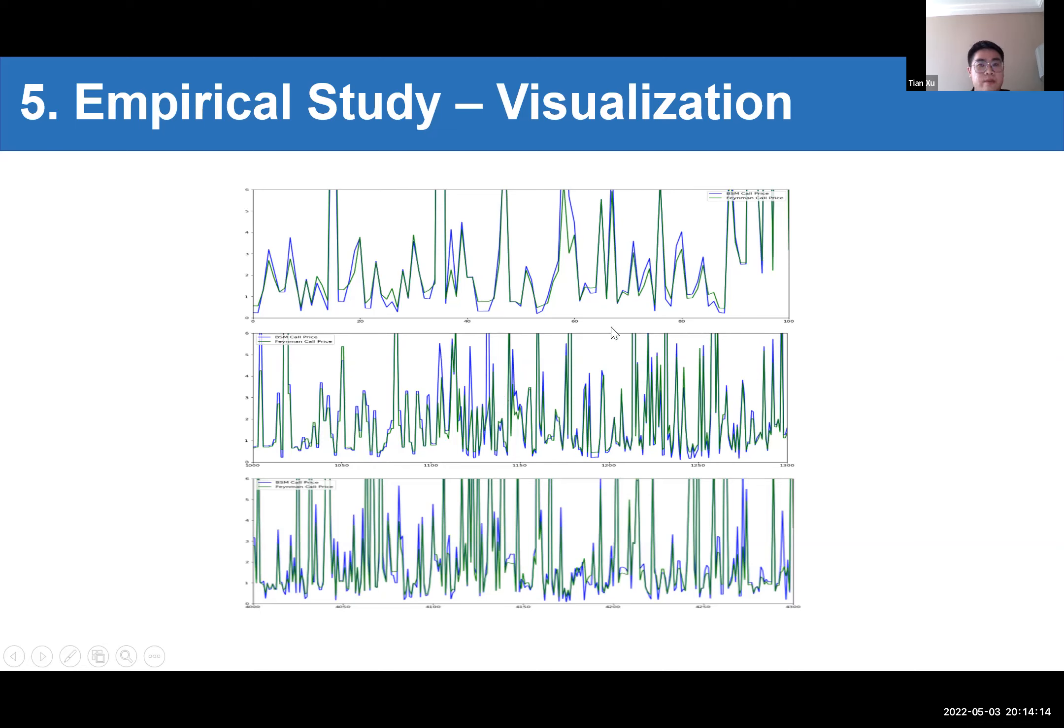For the first graph, I choose the first to the 100th asset. The second is 1,000 to 1,300. Each graph has different size, but as can be seen from the graph, the formula from the symbolic regression are in good agreement with the Black-Scholes model and do not show too many deviations.